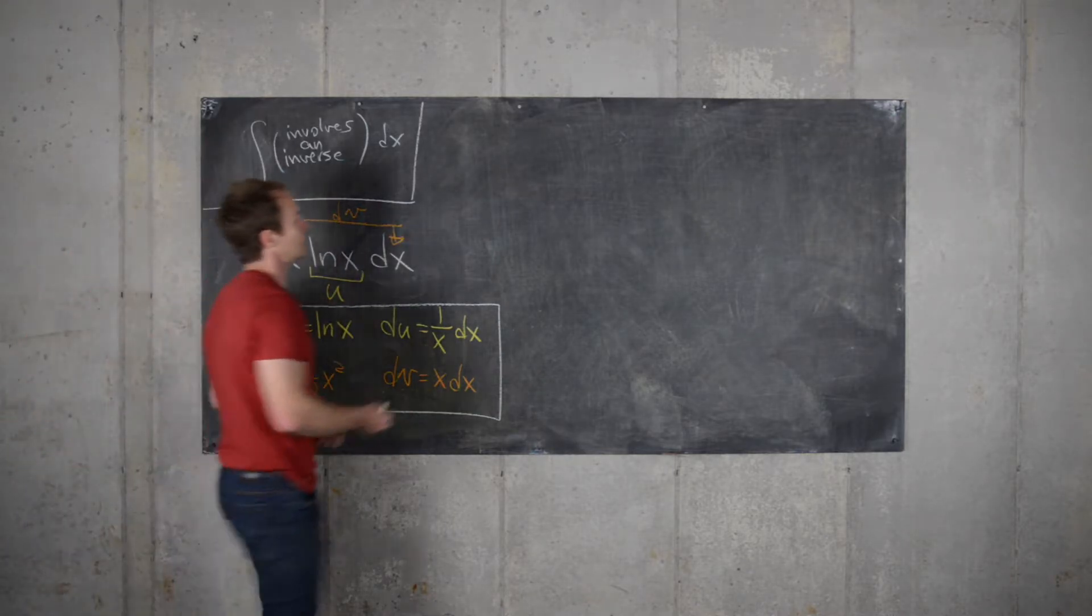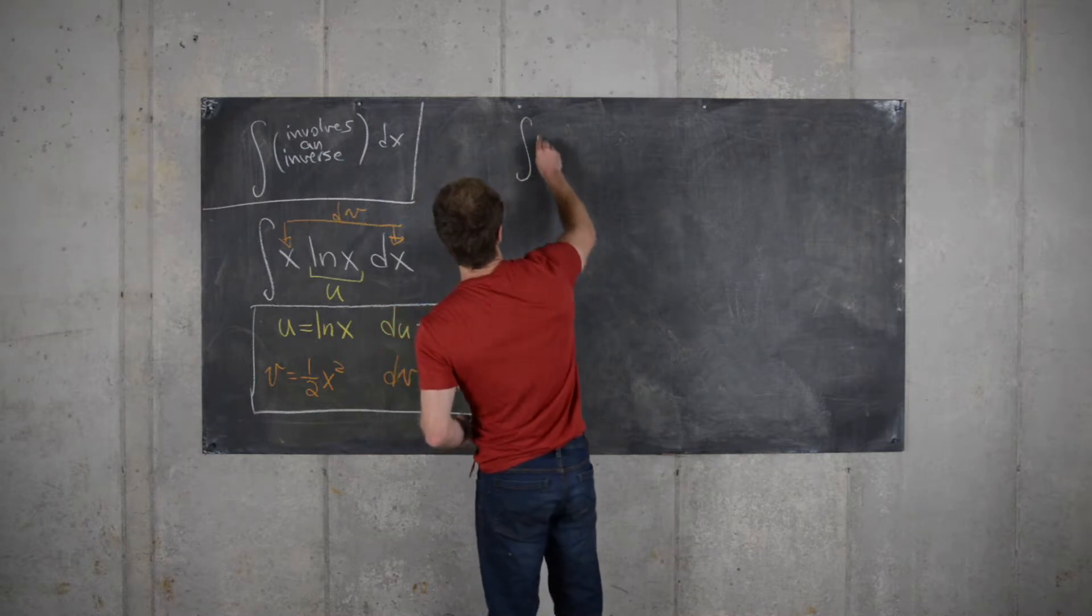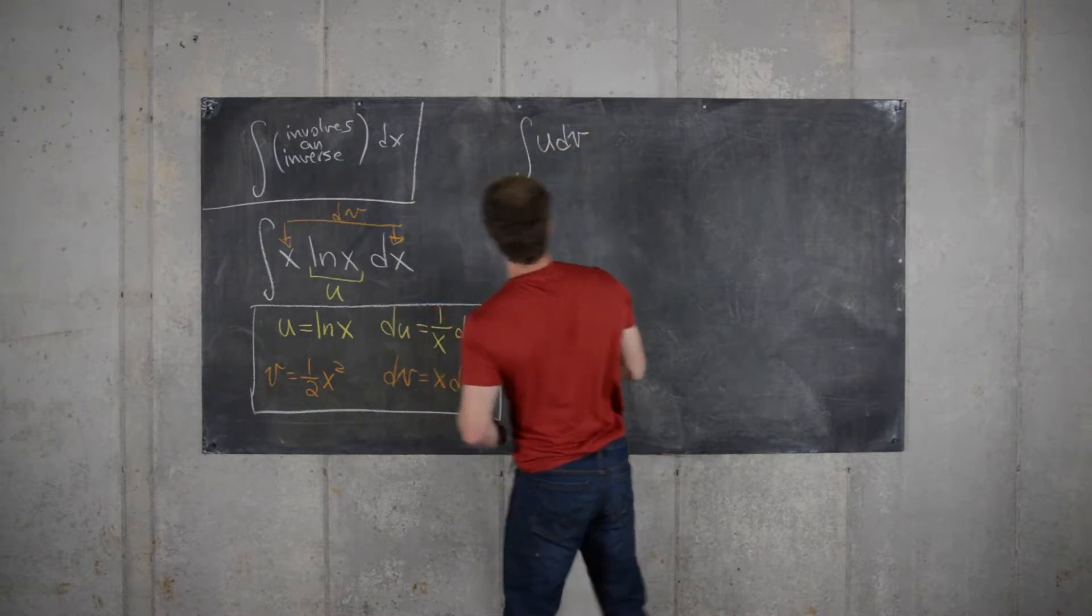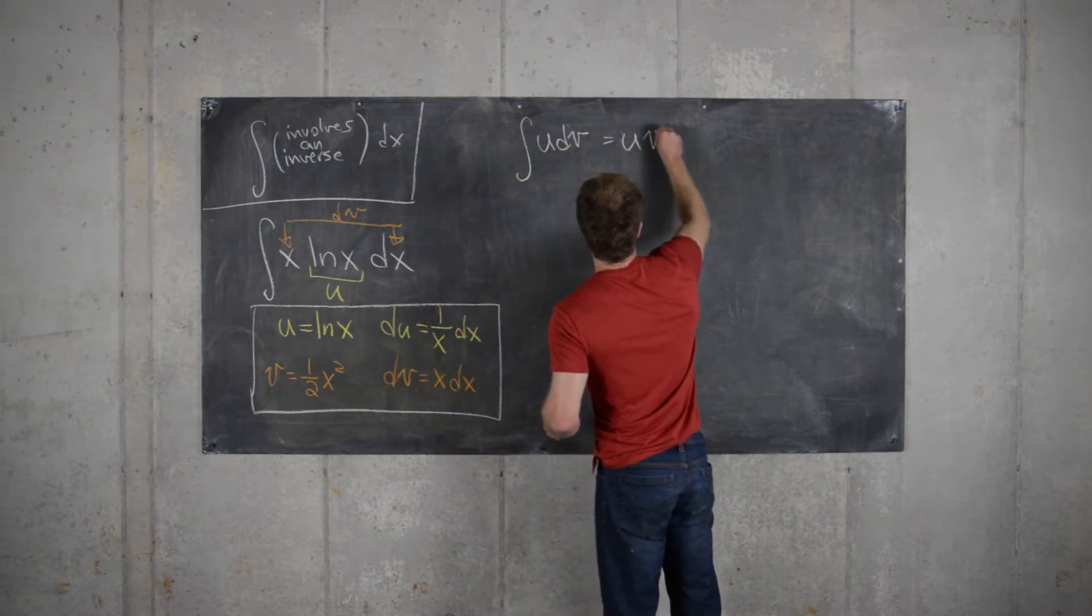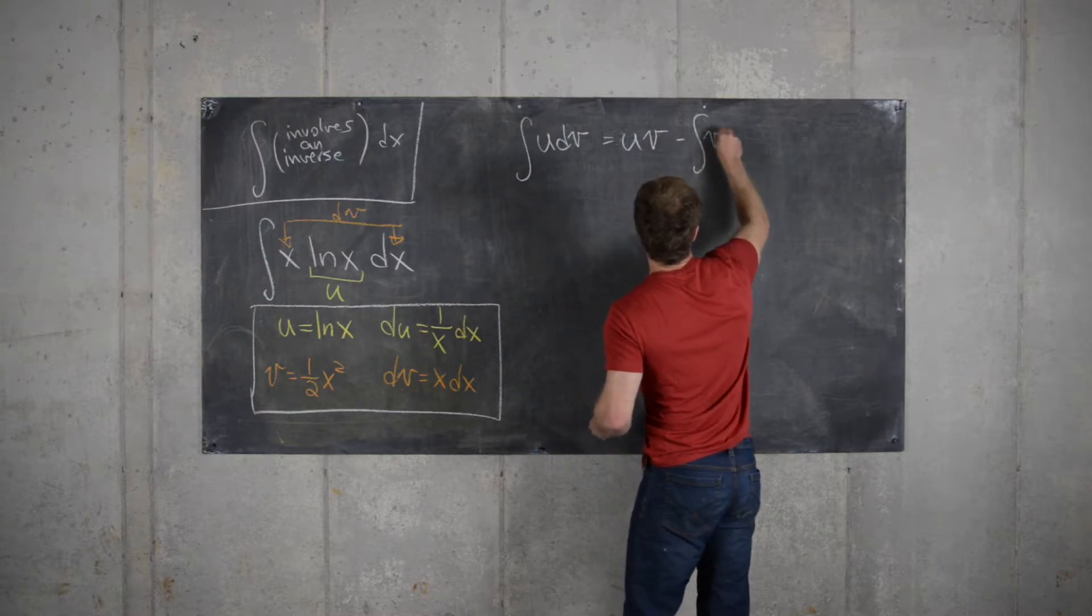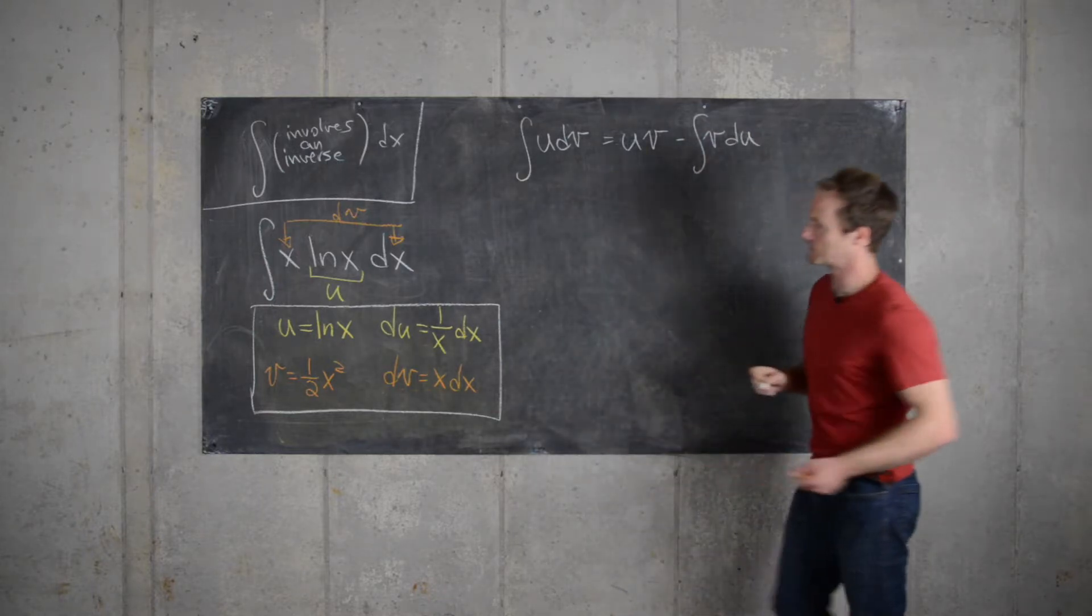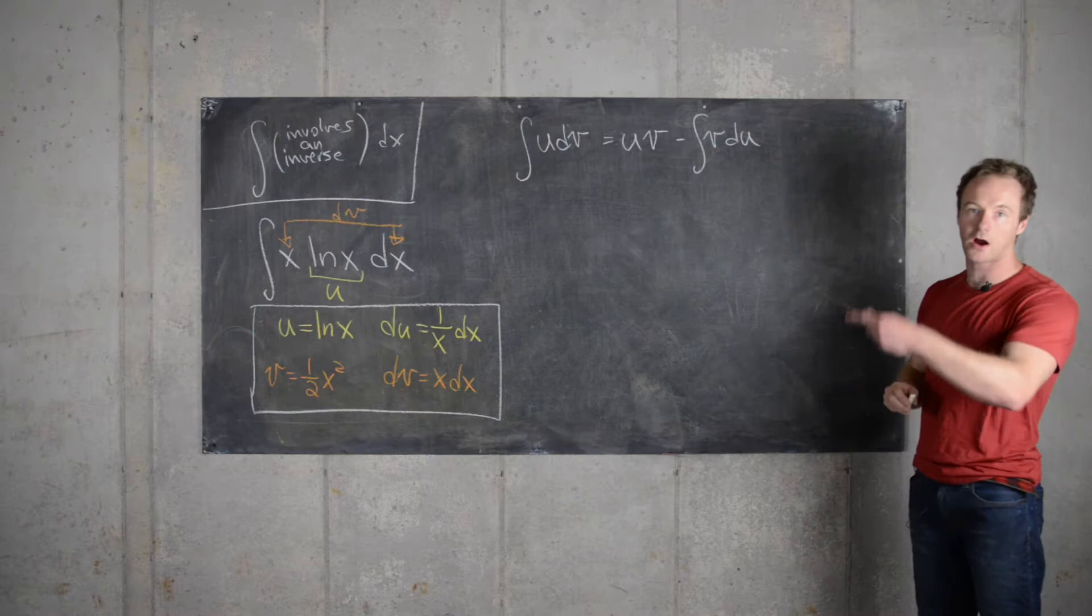And if you recall, the general formula for integration by parts is udv equals u times v minus the integral of v du. So that's what we'll be doing with our particular problem.